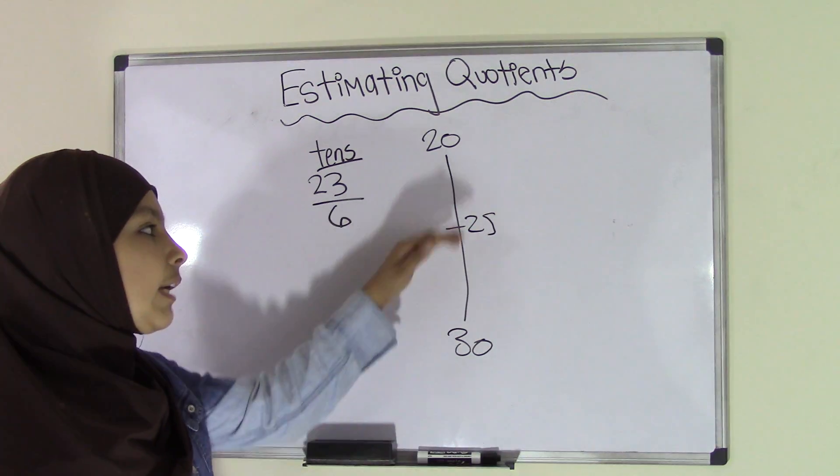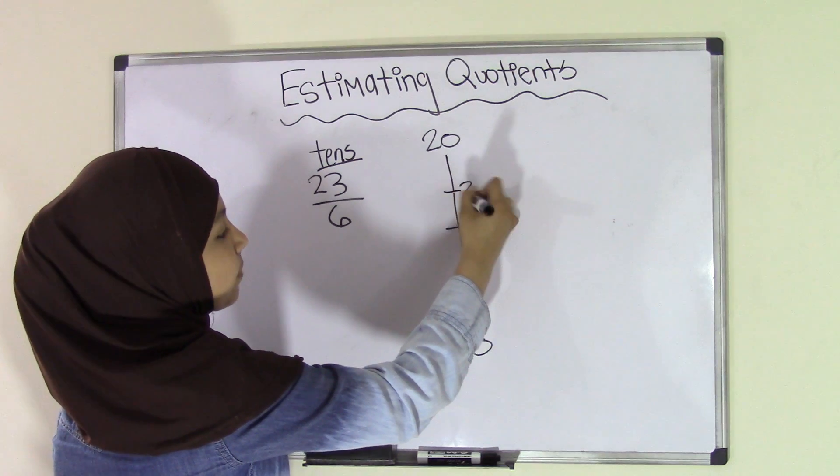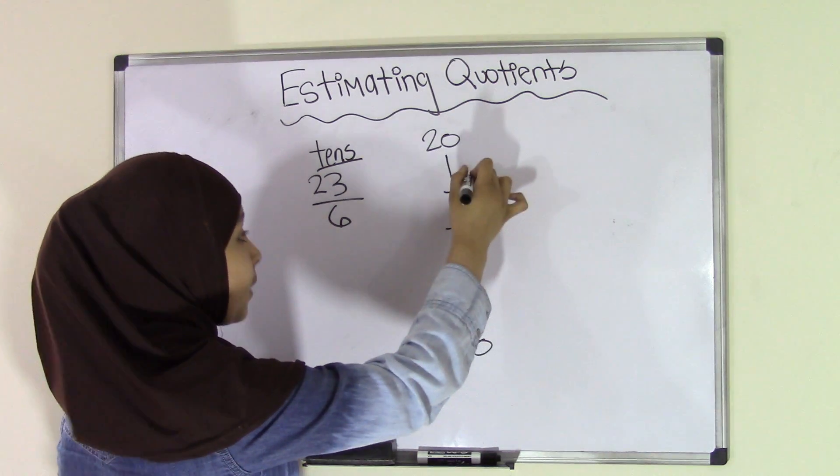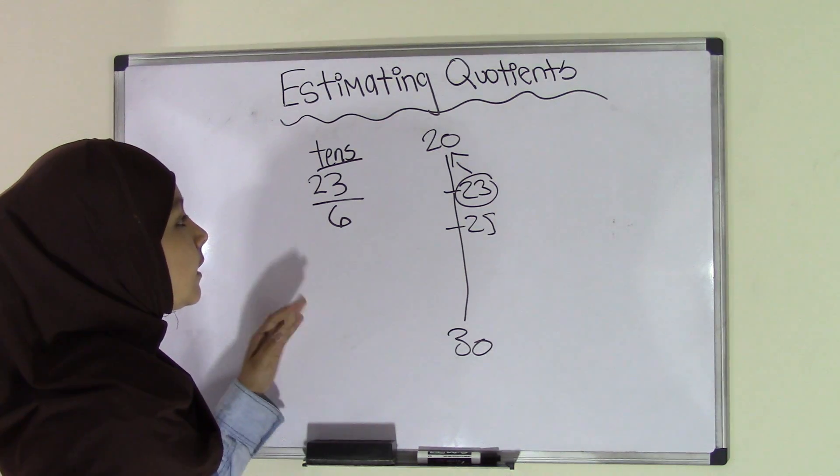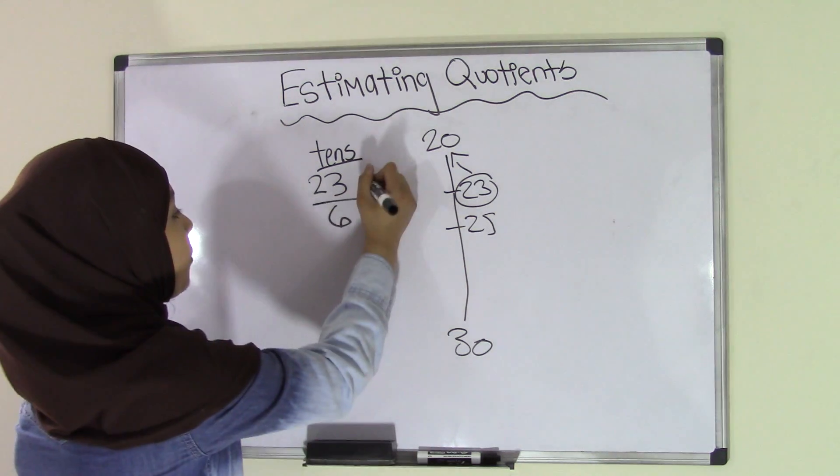And 23 would go about over here. So as you can see, that 23 is closest to 20. Therefore, the closest tenth place to 23 would equal 20.